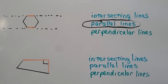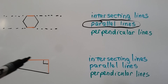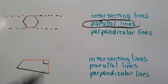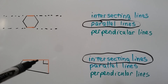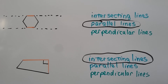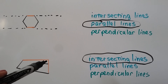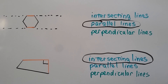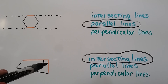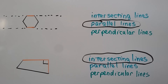Now look at this quadrilateral. We have this orange line and this orange line. Are they intersecting lines? If you said yes, you're right — they're intersecting right here. Are the orange lines parallel lines that never cross or meet? No, they meet right here, so they're not parallel. Are they perpendicular lines? Do they form right angles where they meet? Yes, they do — they're making a right angle, and we can see the little right angle mark symbol right here. So they are perpendicular lines.